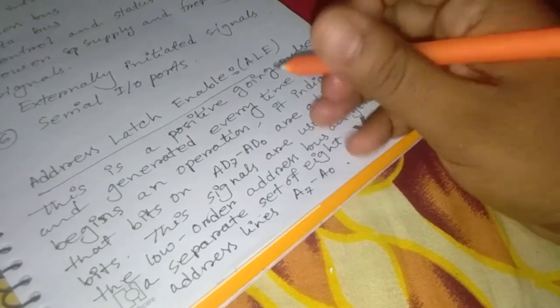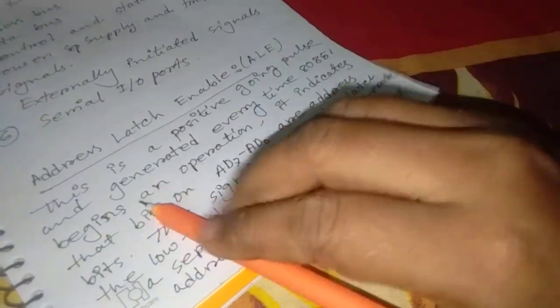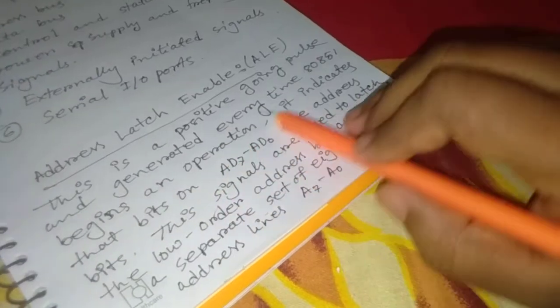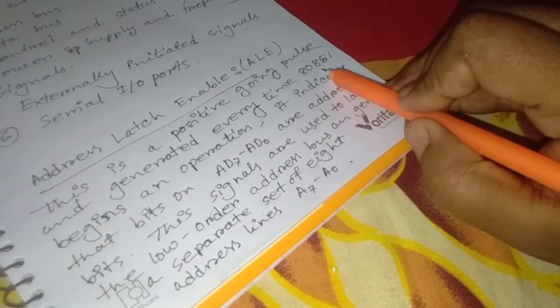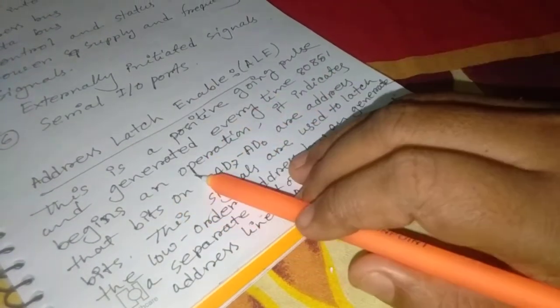The addressless enable, the short form is ALE. This is a positive going pulse and generated every time 8085 begins an operation.